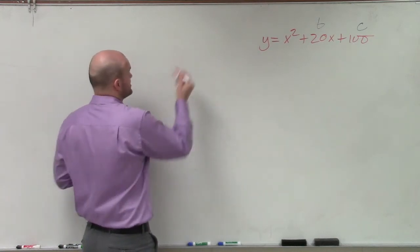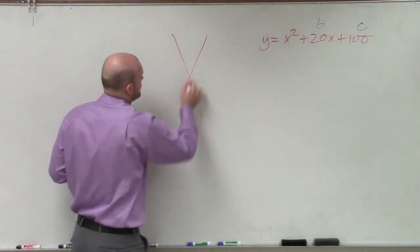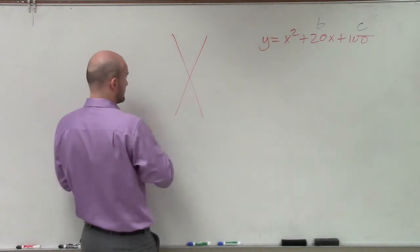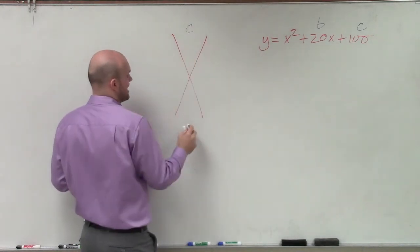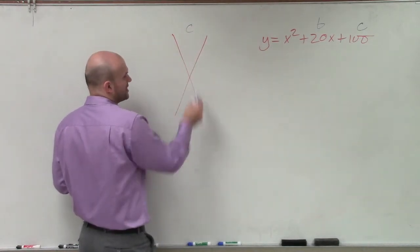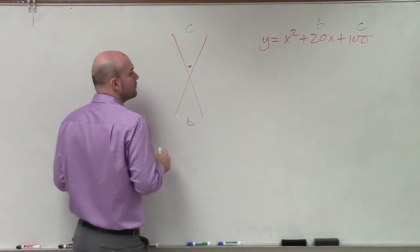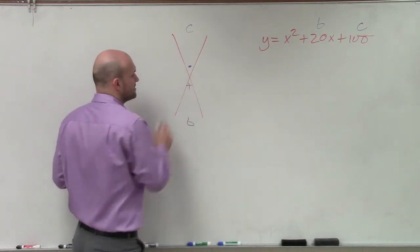And remember, those come from our standard form of our quadratic. So what I like to do is just use my x method, where I have a c up top and the b on the bottom. And again, what we're trying to do to factor this is what two numbers multiply to give us c, but then add to give us b.